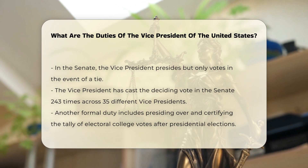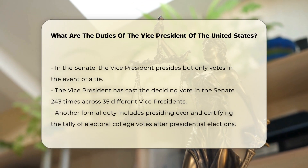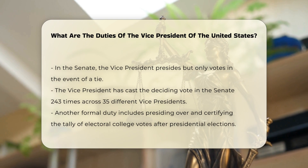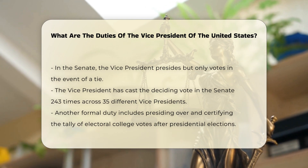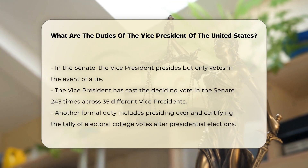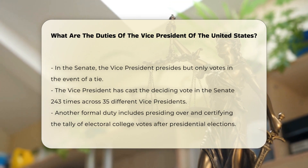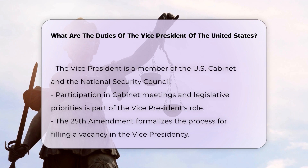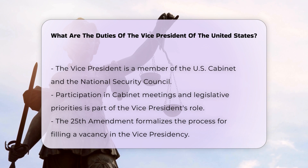Another formal duty of the Vice President is to preside over and certify the tally of Electoral College votes after a presidential election. The Vice President is also a member of the U.S. Cabinet and the National Security Council, participating in executive government and national security matters, including attending cabinet meetings and contributing to the administration's legislative priorities.